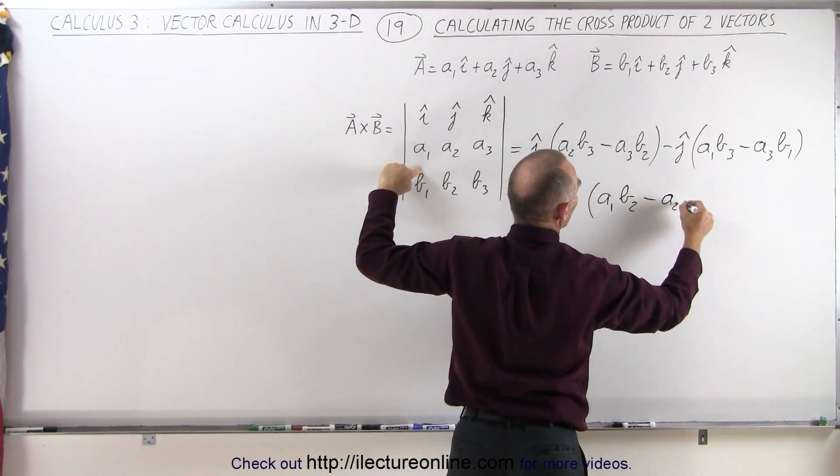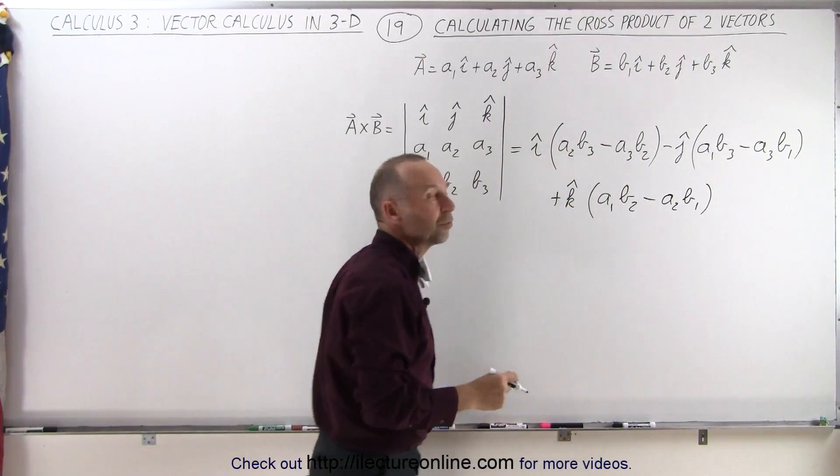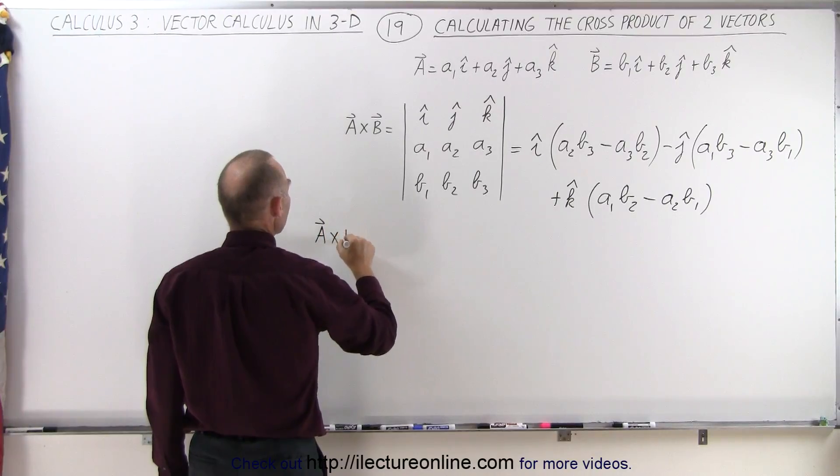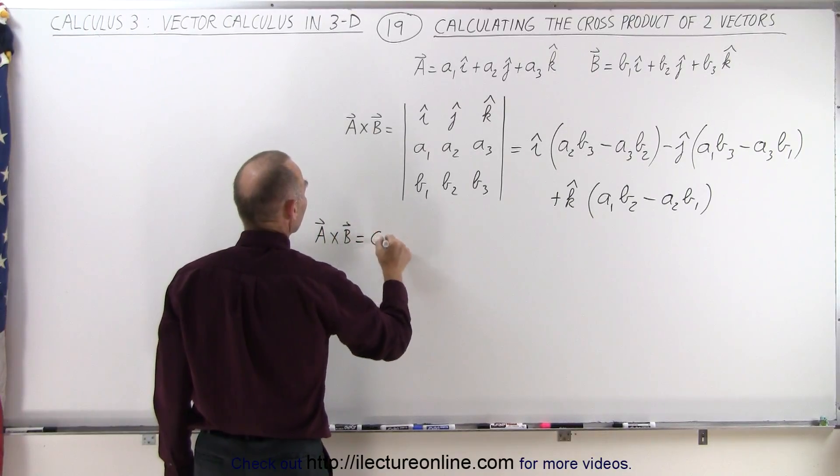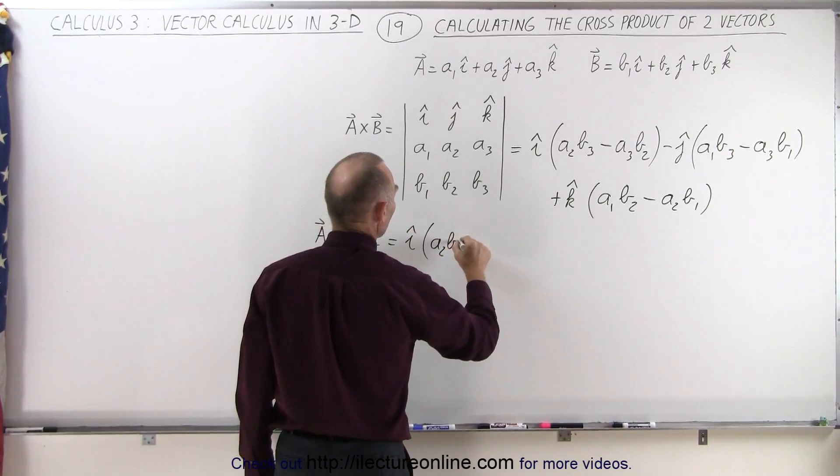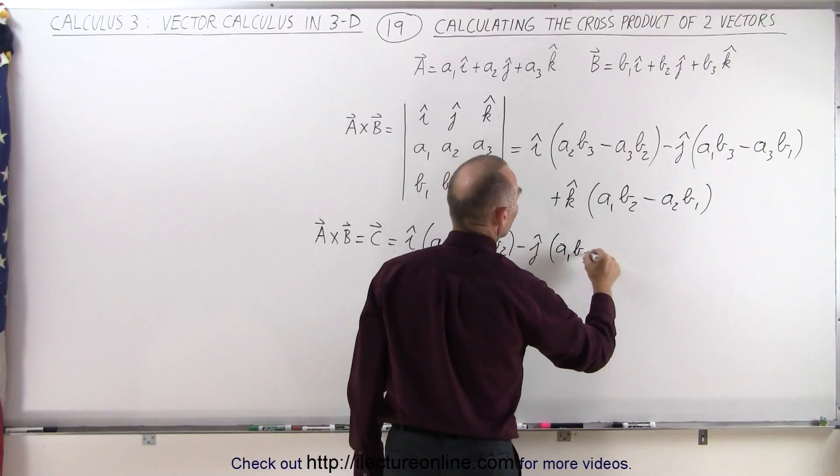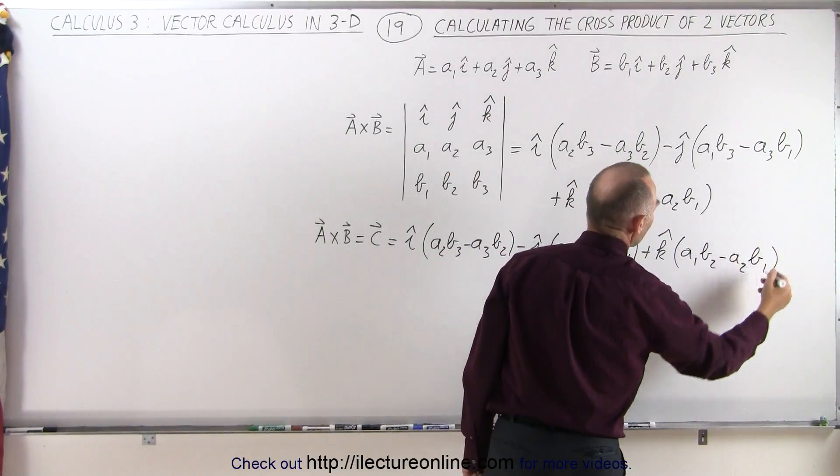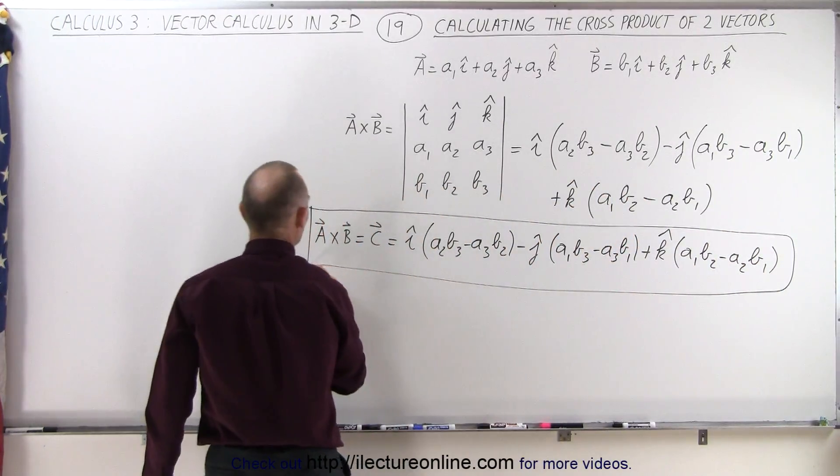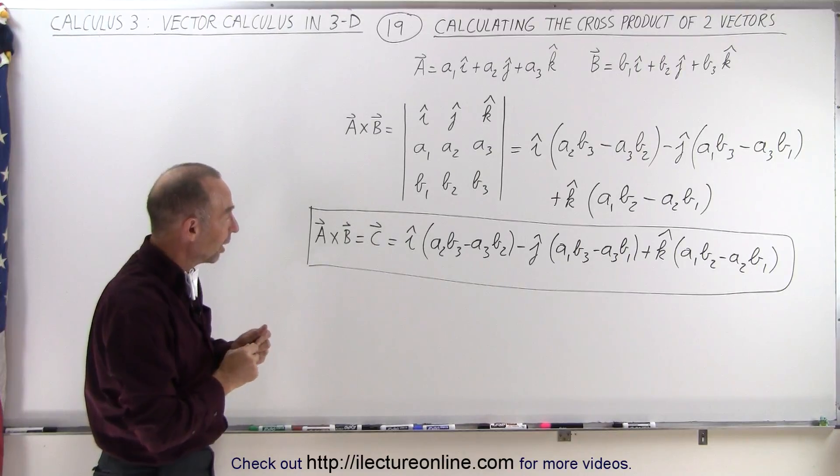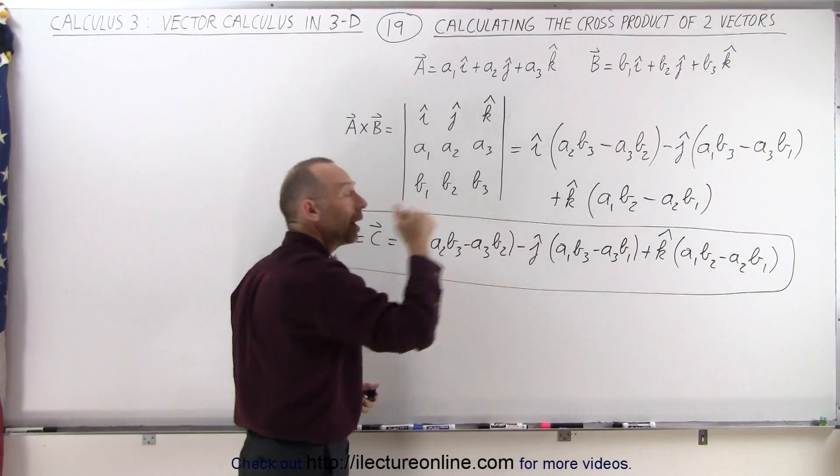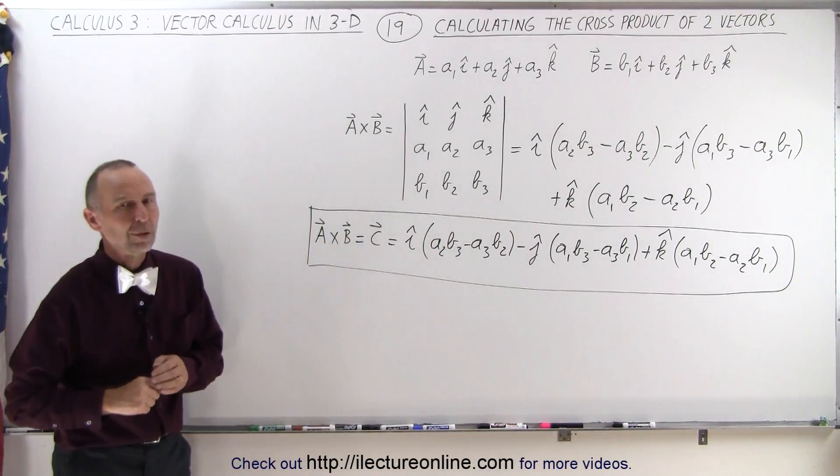And this then becomes the cross product, so you can then say that A cross B is equal to the vector C, which is now defined by the i, j, and k components. And this is then the definition of how you find the cross product of two vectors, which therefore gives you another vector which has an I, a J, and a K component, an X, Y, and a Z component, and that's how you find the components.